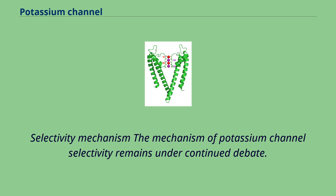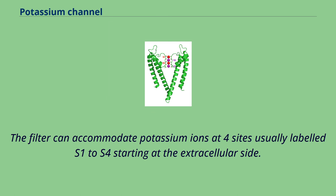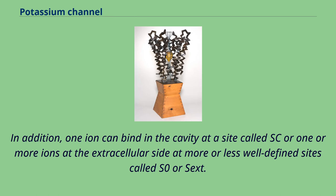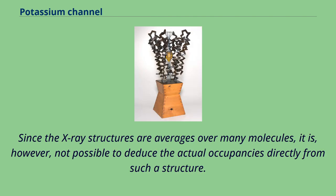The mechanism of potassium channel selectivity remains under continued debate. The carbonyl oxygens are strongly electronegative and cation-attractive. The filter can accommodate potassium ions at four sites usually labeled S1 to S4 starting at the extracellular side. In addition, one ion can bind in the cavity at a site called SC, or one or more ions at the extracellular side at sites called S0 or SEXT. Several different occupancies of these sites are possible. Since X-ray structures are averages over many molecules, it is not possible to deduce actual occupancies directly from such a structure.